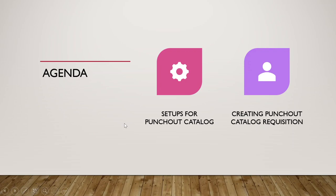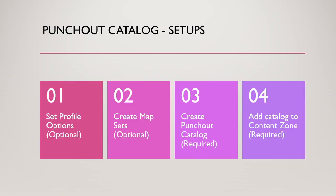For today's video agenda we will be covering the setups for Punch-Out catalog and then show how to create a requisition using that particular Punch-Out catalog. There are four setups required for Punch-Out catalog. The first is setting profile options. The first two setups are optional and can be set up depending on the business requirement. The third setup, which is create Punch-Out catalog, is the most important setup because it captures the different attributes required to have a connection between Oracle Cloud and the supplier. The last is adding the catalog to the content zone.